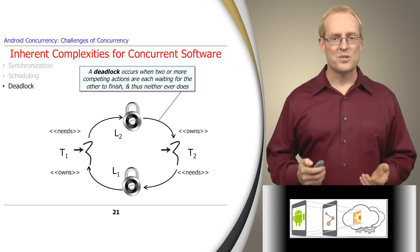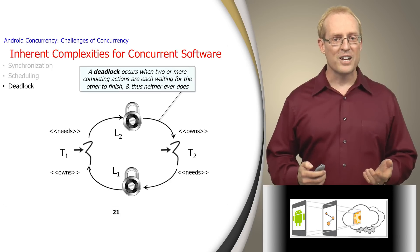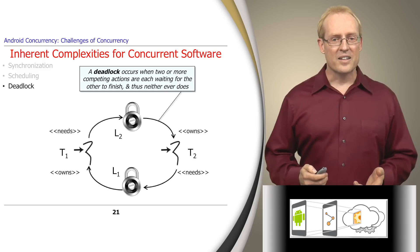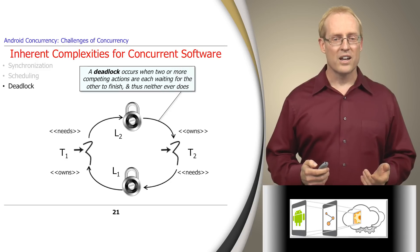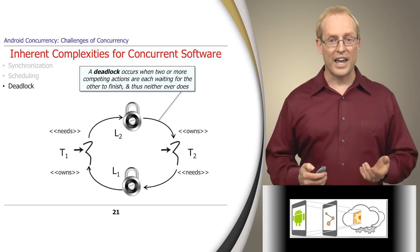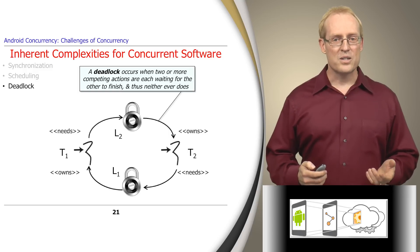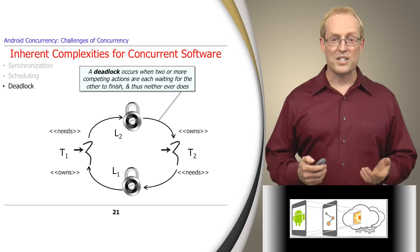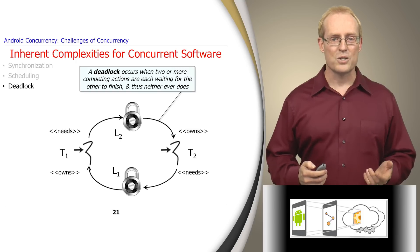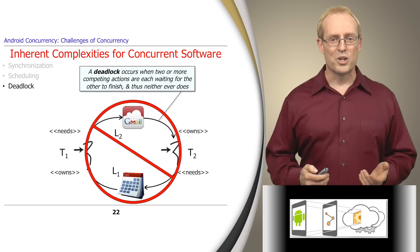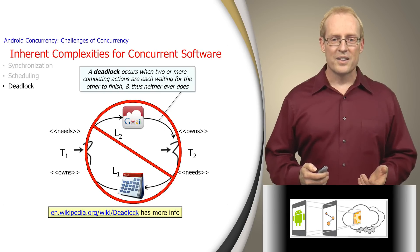Another inherent complexity is deadlock, which occurs when two or more competing actions are each waiting for the other to finish, and thus none ever do. The diagram on this slide shows a deadlock where thread T1 owns lock L1 and is trying to acquire lock L2, while thread T2 owns lock L2 and is trying to acquire lock L1. This circular wait, or deadly embrace, blocks the threads indefinitely. Identifying, detecting, and removing deadlocks is an inherent complexity of developing concurrent software — for example, you wouldn't want the Android Gmail app to deadlock on resources held by the calendar app and vice versa.